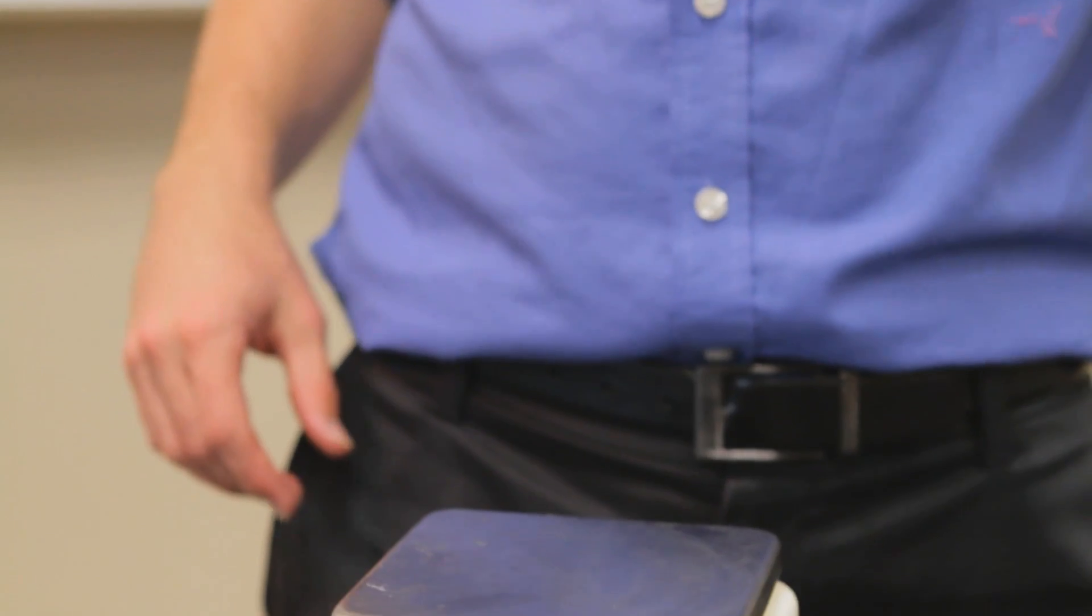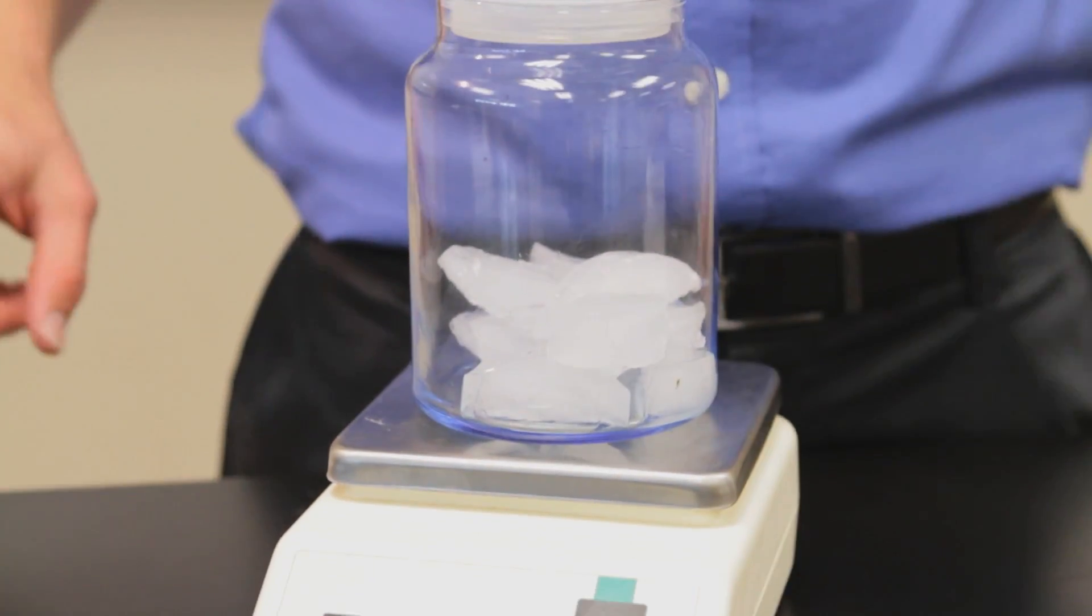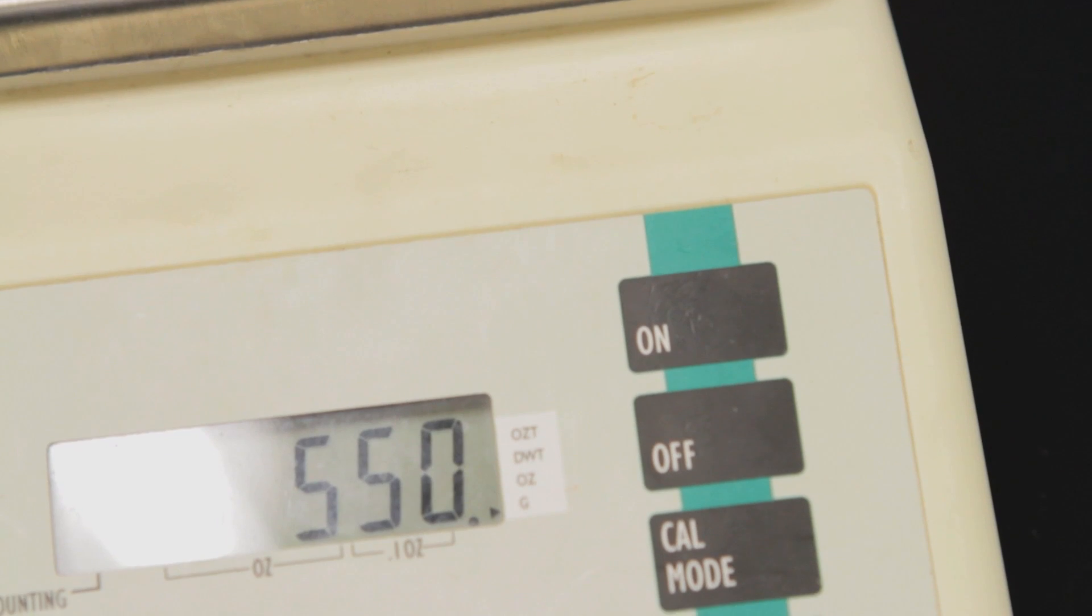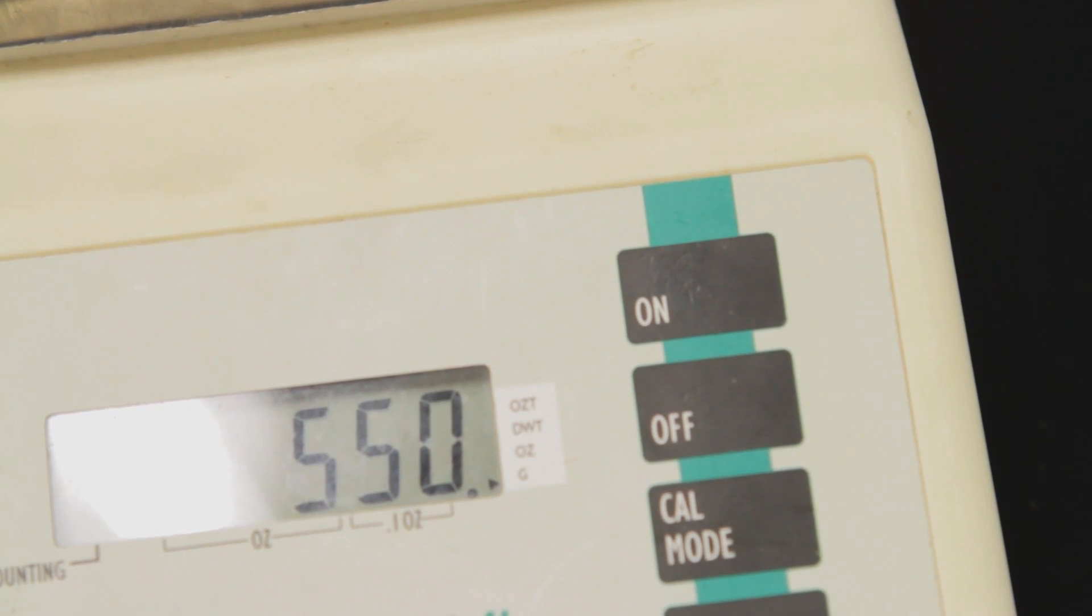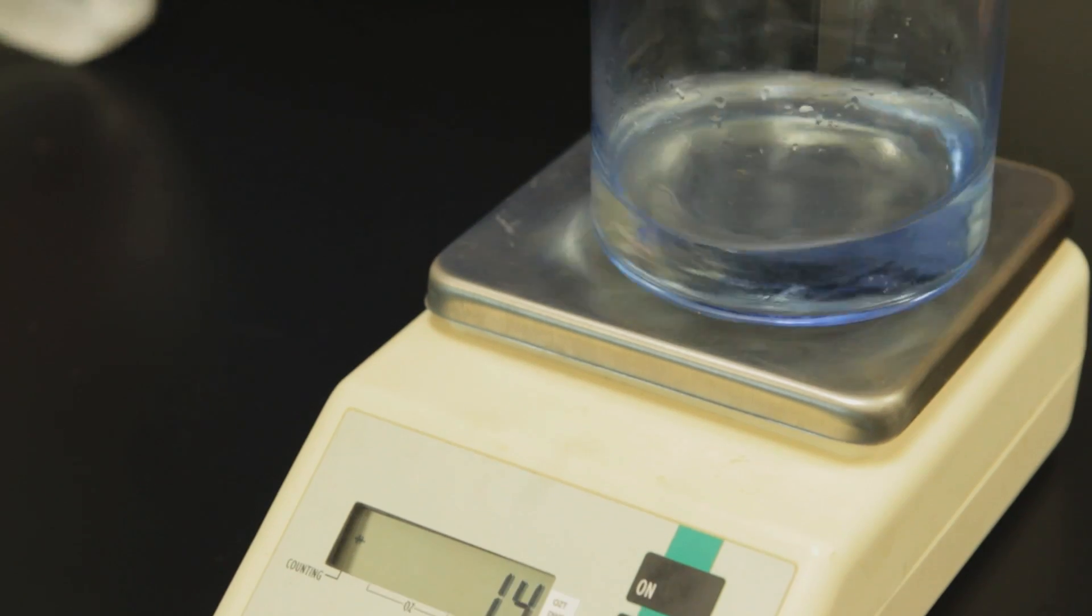Here is another example, ice undergoing a phase change becoming liquid water. Initially, the mass is 550 grams, and when it melts, we see once again the same mass results.